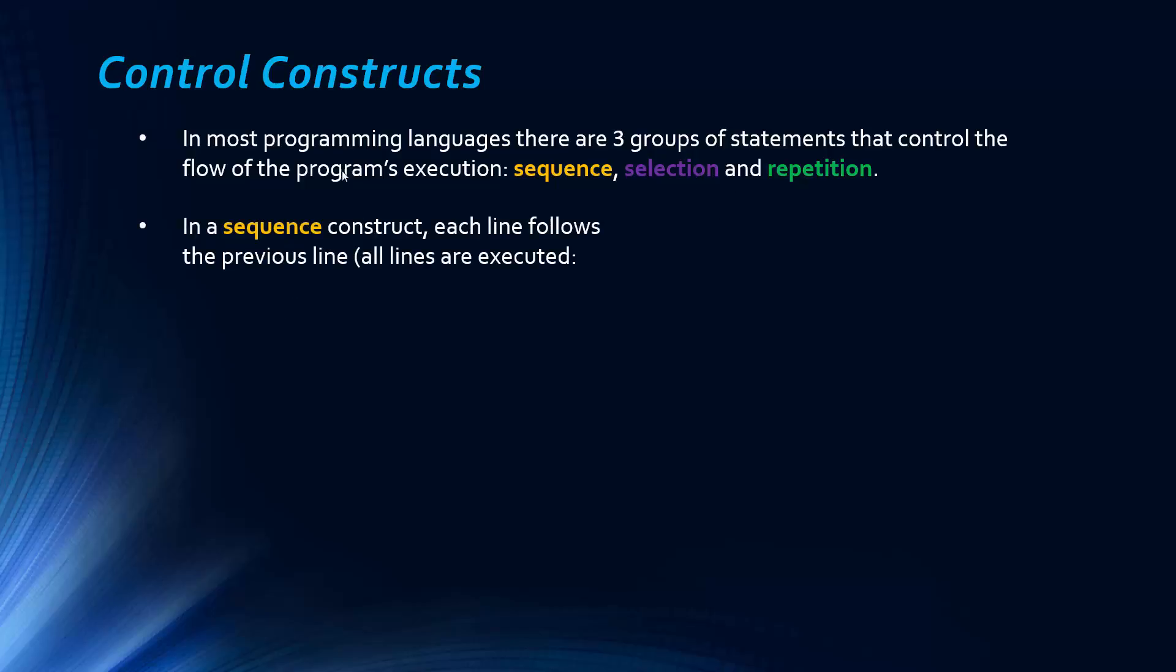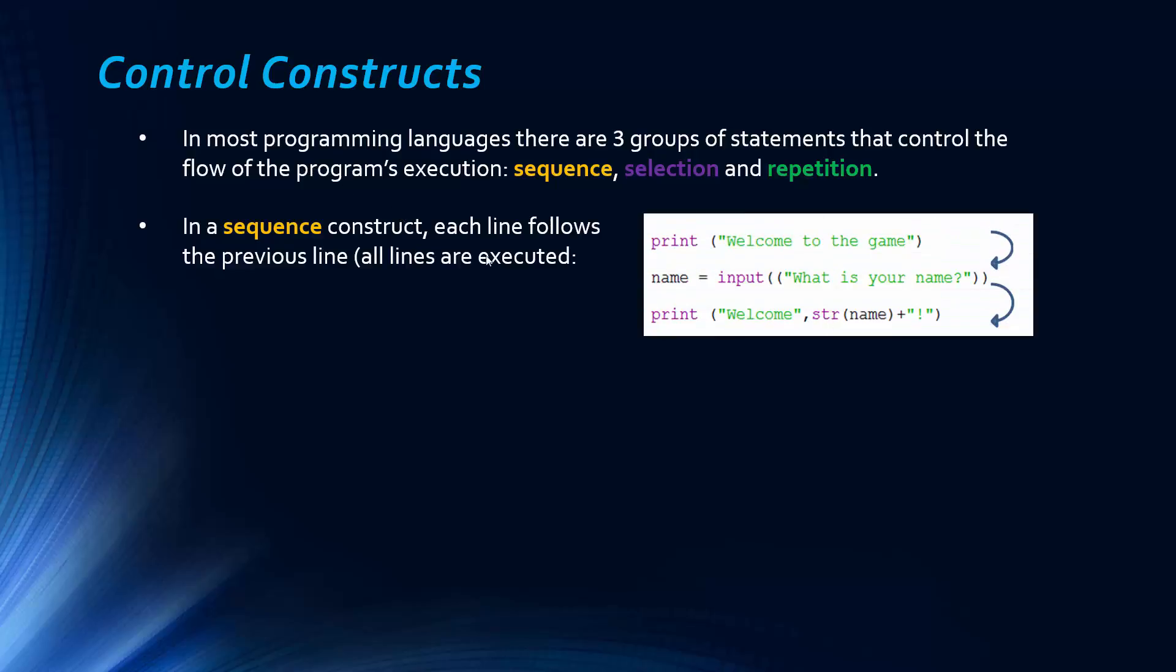So the first one is sequence. And in the sequence construct, each line follows the previous line. So all the lines are executed. So really, just each line is executed following the previous line. So this would be your basic program. Your first couple of programs probably would be like this, just this.